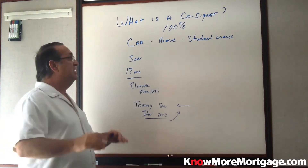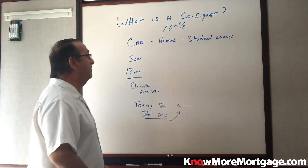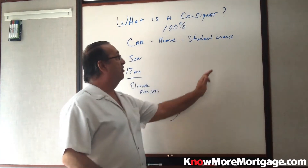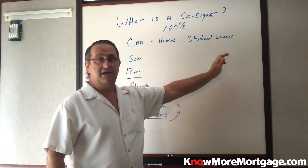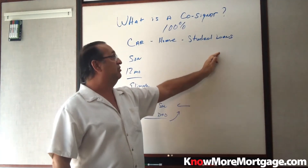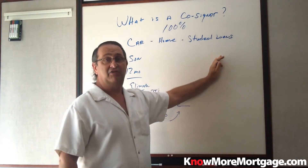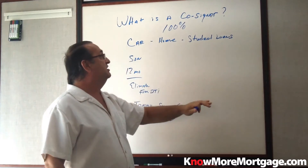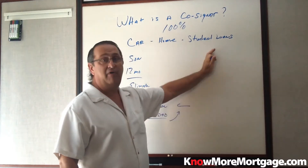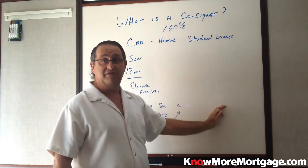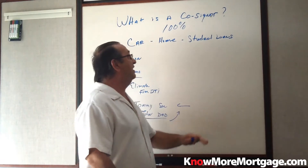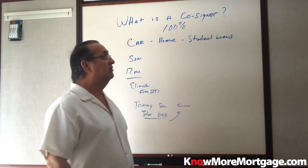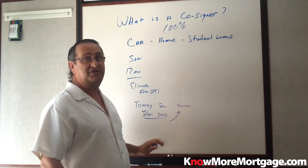Remember, a co-sign is 100% your debt as well. It counts toward your debt-to-income ratio. For student loans — those are your debt. If you co-signed for your child and they're still in college, and you can show that they'll be in college for a couple more years, the underwriter, depending on the lender, may waive that debt because it's in deferment and your child is still in school. There are some exceptions to these rules.